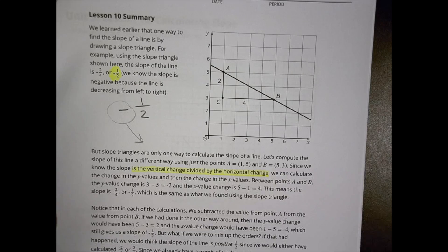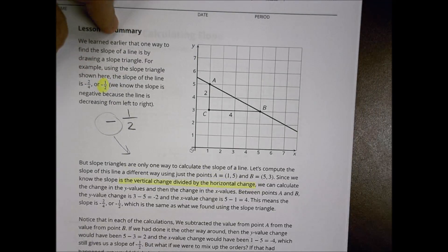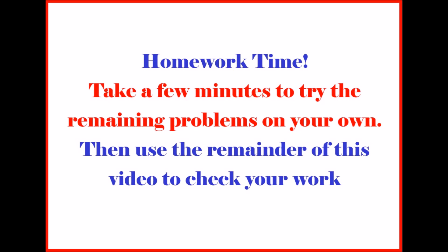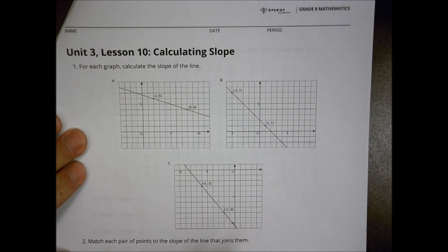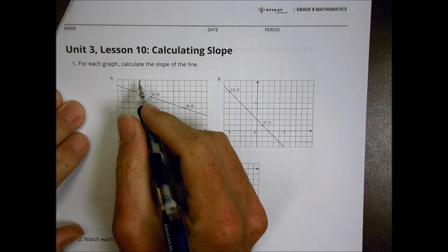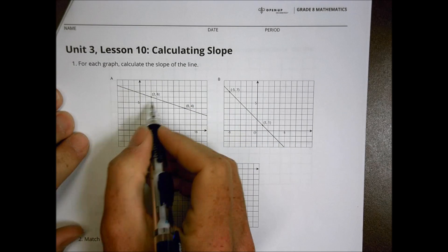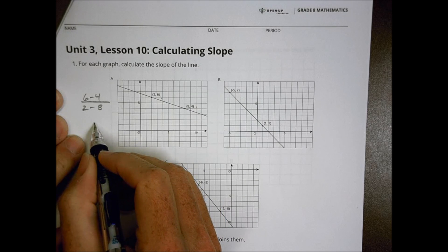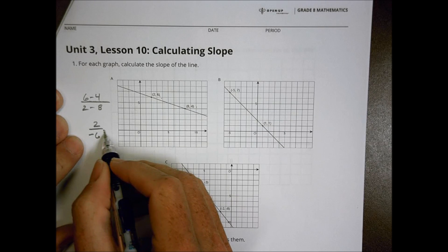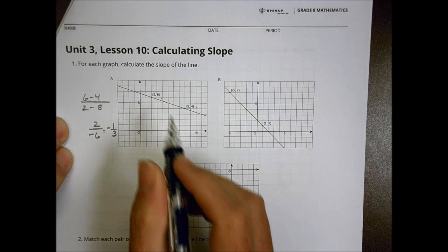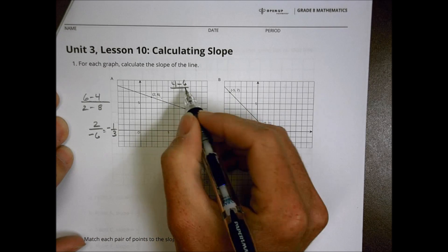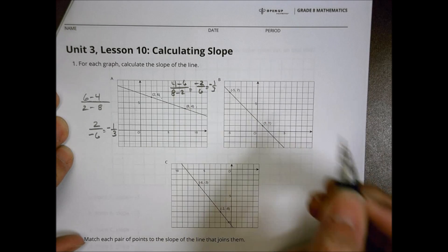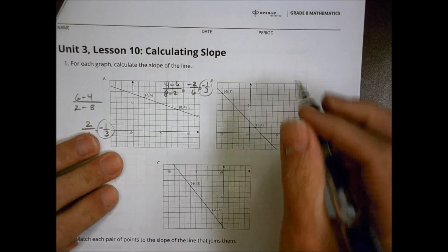Let's take a look at tonight's homework — calculating slope using some given numbers. For number 1a, let's do 6 minus 4 over 2 minus 8. That gives us 2 over negative 6, which is negative one-third. Going the other way — 4 minus 6 over 8 minus 2 — gives negative 2 over 6, still negative one-third. You get the same solution either way.